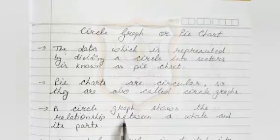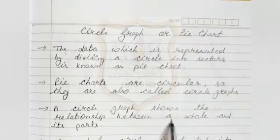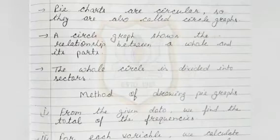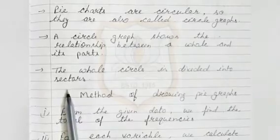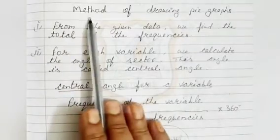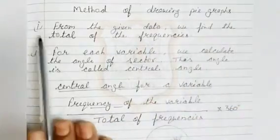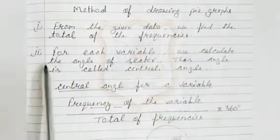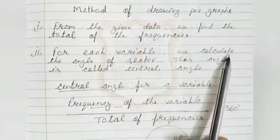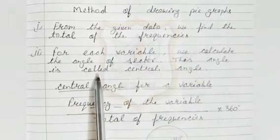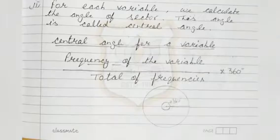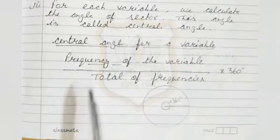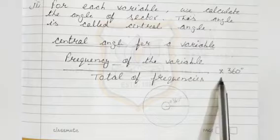A circle graph shows the relationship between a whole and its parts. The whole circle is divided into sectors. Now we will discuss the method of drawing pie graphs. The first step is to find the total of the frequencies from the given data. The second step is to calculate the angle of the sector for each variable. This angle is called the central angle.